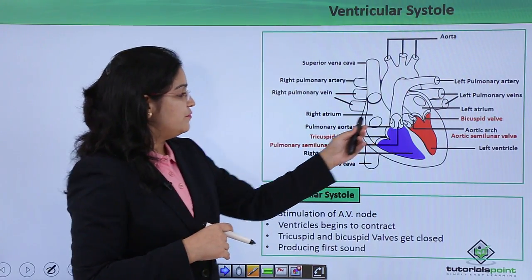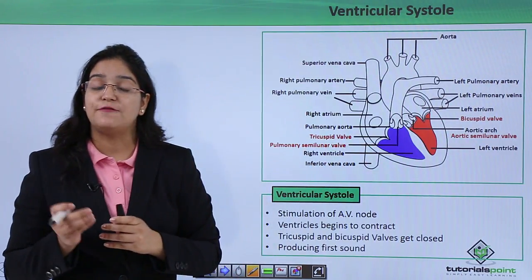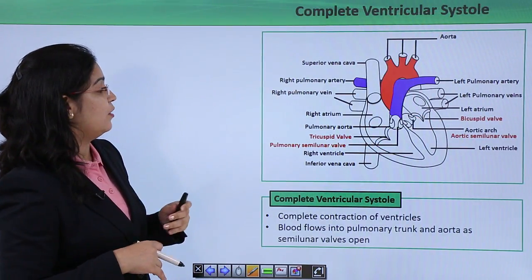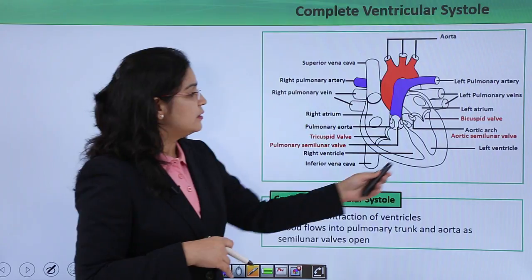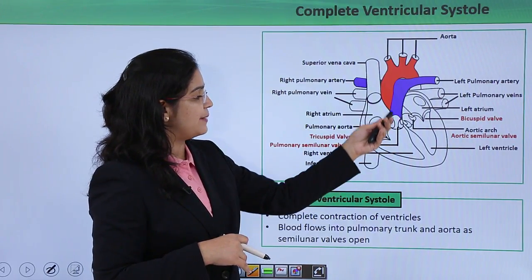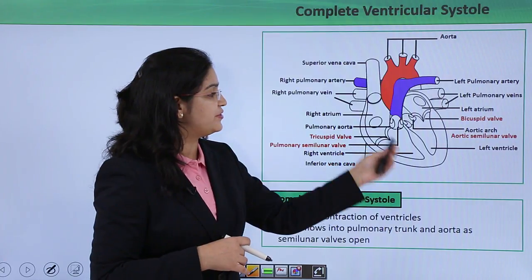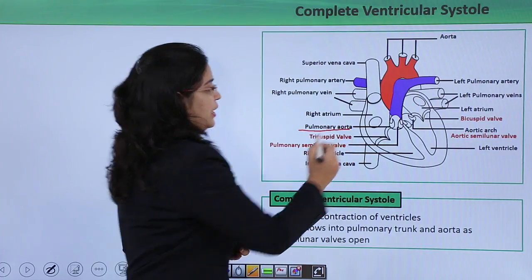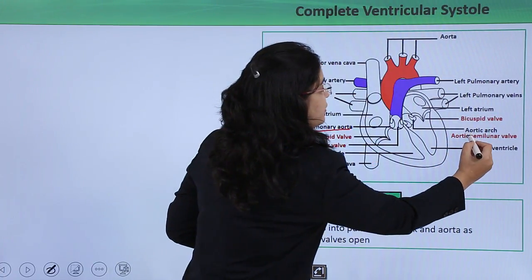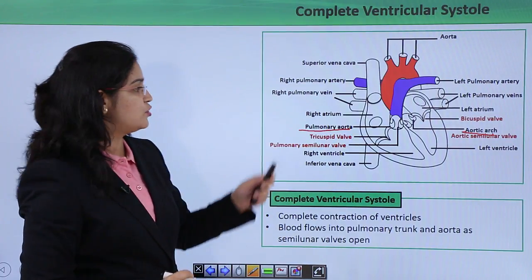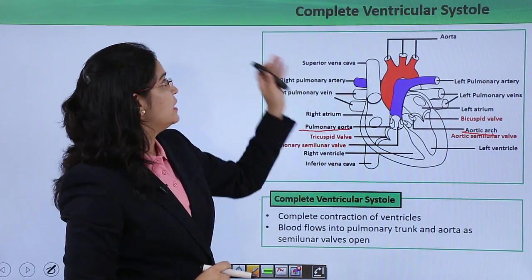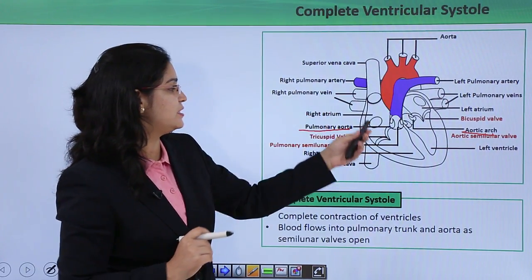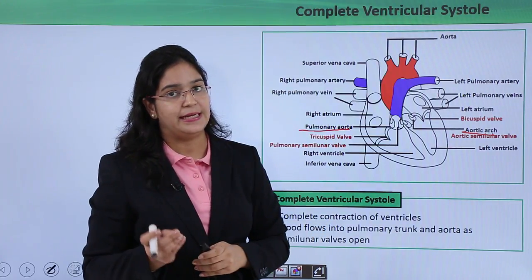The ventricles start applying force, but initially it is not sufficient to open the semilunar valves. As ventricular compression increases, the semilunar valves get opened and blood flows from the ventricles to their respective destinations — from the right ventricle to the pulmonary artery and from the left ventricle through the aortic arch. This is the complete ventricular systole phase, with the ventricles in full contraction.